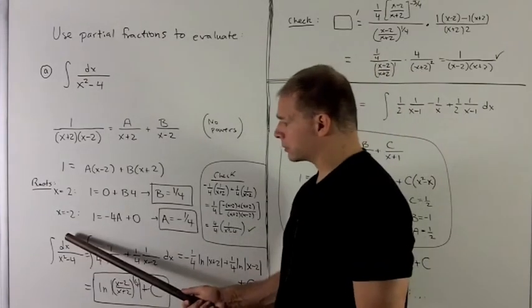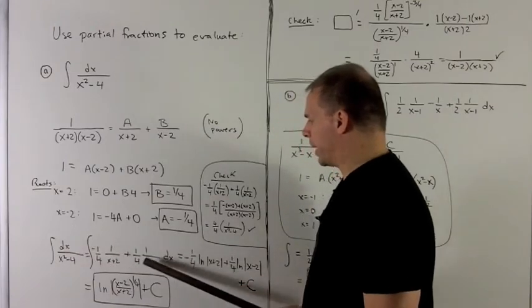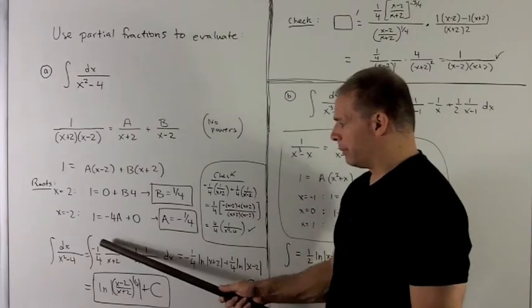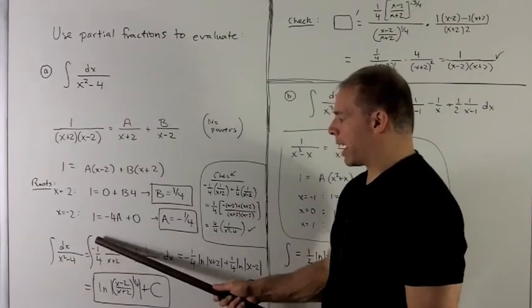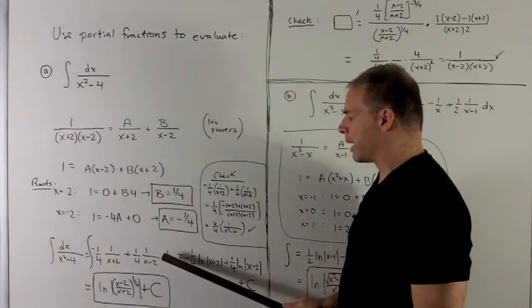So now, I can replace what's in the integrand with our new expansion. So that's going to give me an indefinite integral of minus 1 quarter, 1 over x plus 2, plus 1 quarter, 1 over x minus 2 dx.